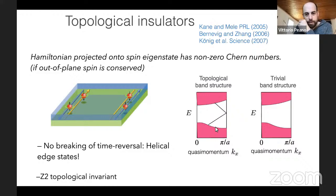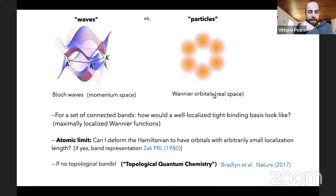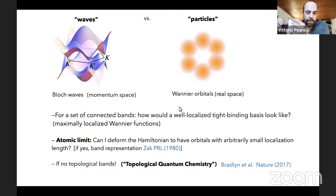The Z2 invariant applies to systems with Kramers degeneracy. If a state connects two subsequent bands, there is no way to remove it. There are really just two situations: either a trivial band structure or one with an edge state connecting the two bands.